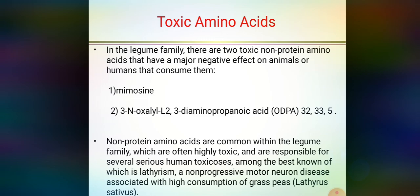One of the major effects of mimosin is that it stops hair growth. It also has an adverse effect on the growth of ruminants because bacteria can convert mimosin to 3,4-dihydroxypyridone, which acts as a goitrogenic agent. That is why mimosin is a quite toxic amino acid for the body.